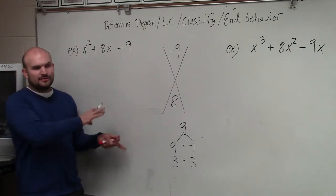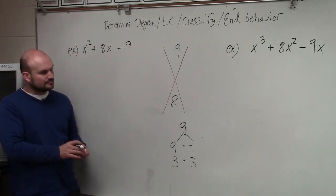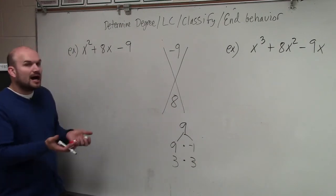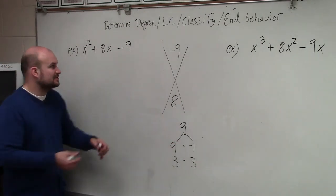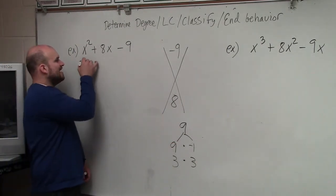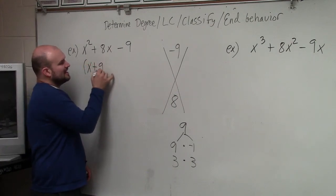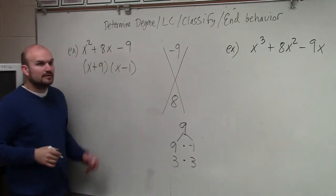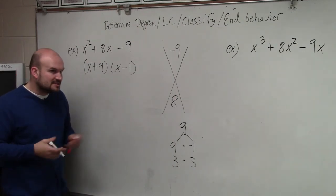So these are your two factors. The factored form is x plus 9 times x minus 1. That is the factored form.